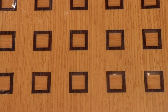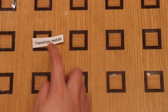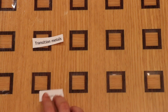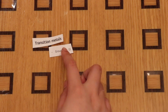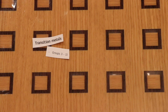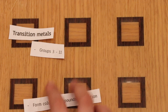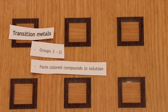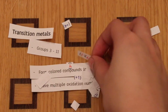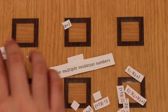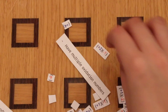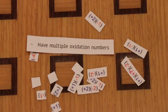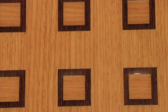Let's backtrack to the transition metals. Groups 3 through 11 consist of transition metals. They form colored compounds in solution and have multiple oxidation numbers.